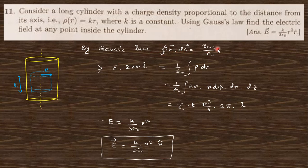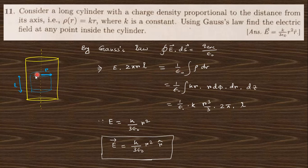From Gauss's theorem, E·dS equals Q enclosed divided by ε₀. On the two planar surfaces, the electric field and surface normal are perpendicular, so their contribution is zero. Only the curved surface contributes: 2πrL. Within this region, the charge is ρ dV where ρ equals kr, and dV in cylindrical coordinates is r dφ dr dz.